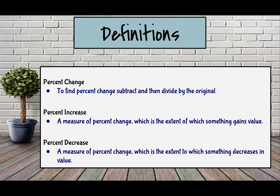The first definition is percent change. Percent change is when you're going from one value to another value. To find percent change you want to subtract and then divide by the original. Percent increase is percent change where it gains value, and percent decrease is a measure of change where it decreases in value.